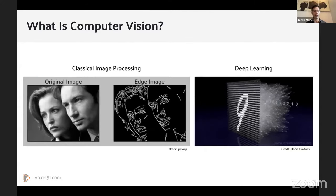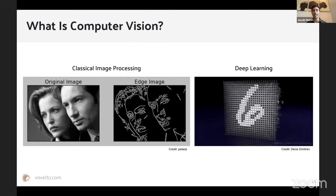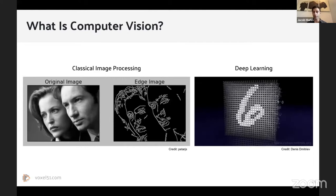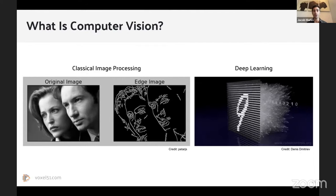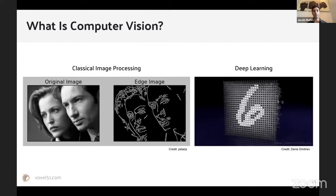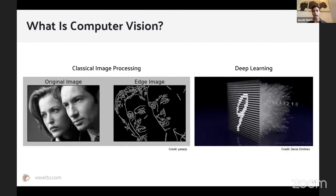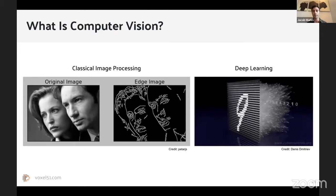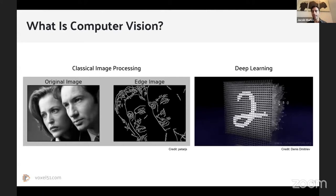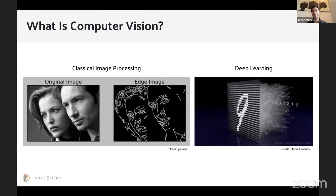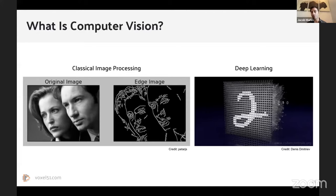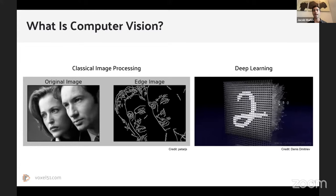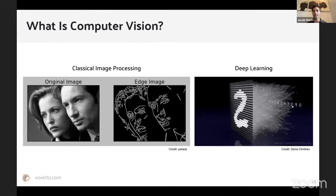There's classical computer vision — techniques like edge detection, Gaussian blurring, and noise removal — which you can do without any machine learning models. And then there's computer vision that is much accelerated by deep learning models. Here we have a visualization of a model taking pixels in and showing the representation throughout the network, along with its classification scores for each of the digits.